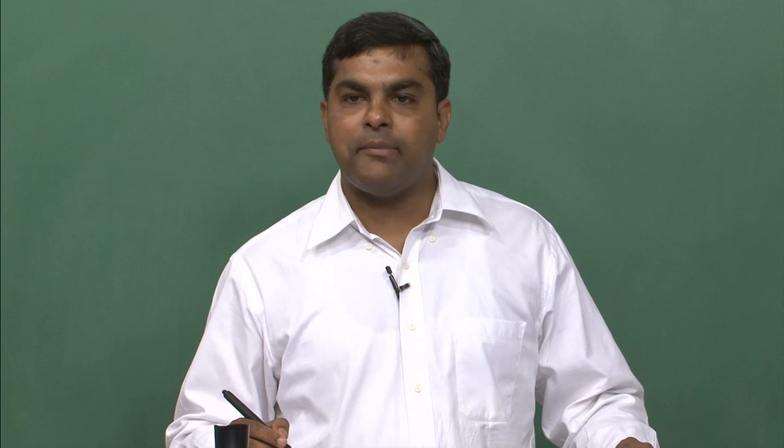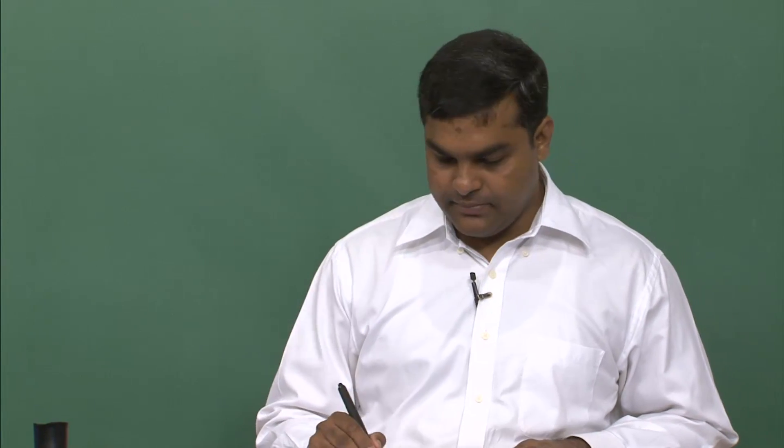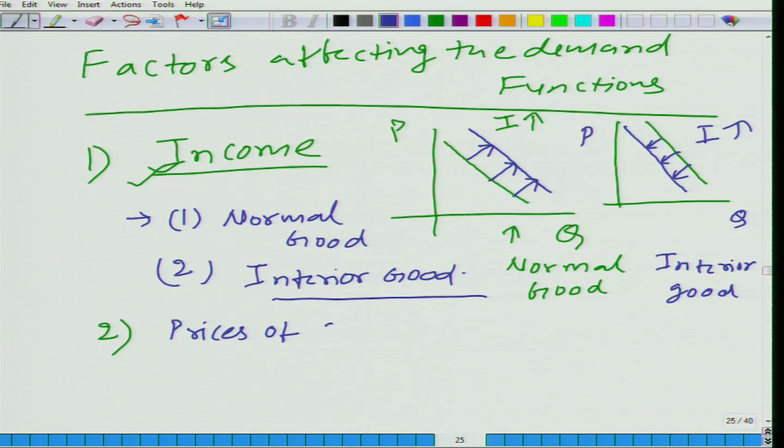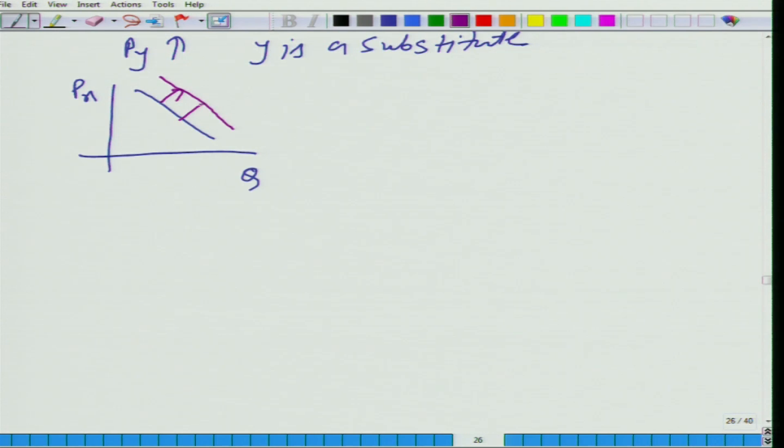The second one is availability of prices of substitutes and complements. So let us say the price of a substitute goes up. What will happen to the demand for good x? Increase. So it will increase. And if y is complement, it will decrease. Is it clear?